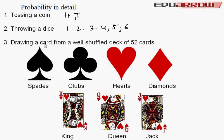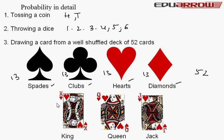Draw a card from a well-shuffled deck of 52 cards. There are hearts, diamonds, and other suits. So there are 52 cards total, with 4 kings, 4 queens, and 4 jacks in the deck.